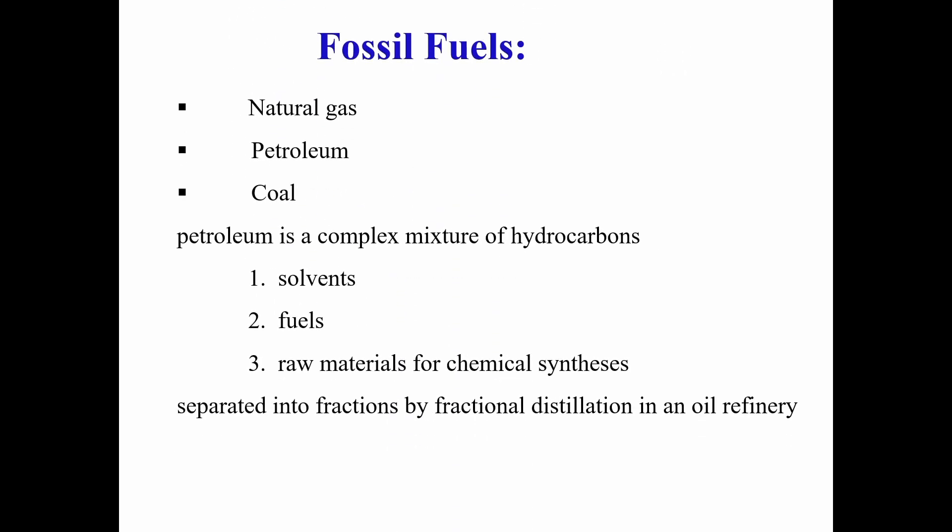The sources of alkanes are natural gas, petroleum, and coal. Petroleum is a complex mixture of hydrocarbons. These are used as solvents, as fuels, and as raw materials for chemical synthesis. Natural gas and petroleum are separated by fractional distillation in a refinery — meaning they are heated with respect to their difference in boiling points. Each component is eluted when its boiling point is reached, fractionally separating them by distillation.